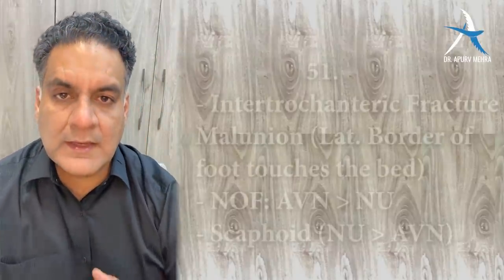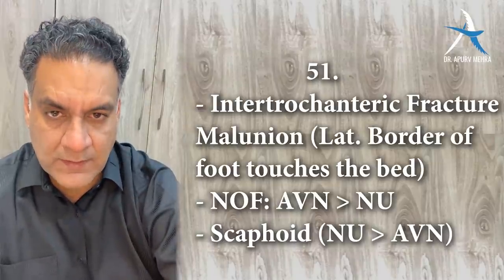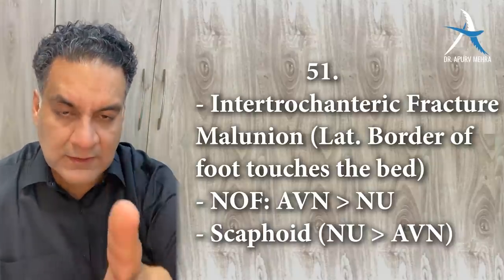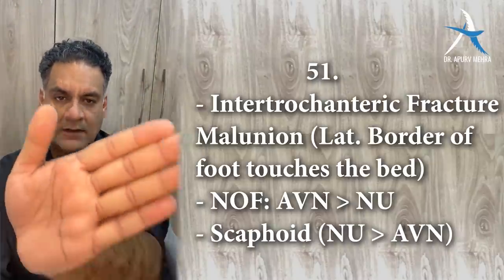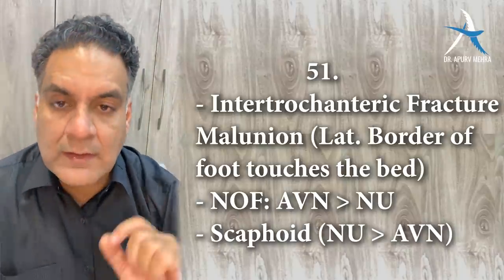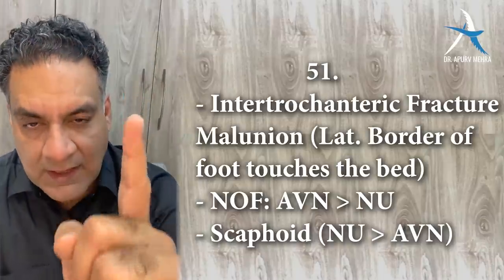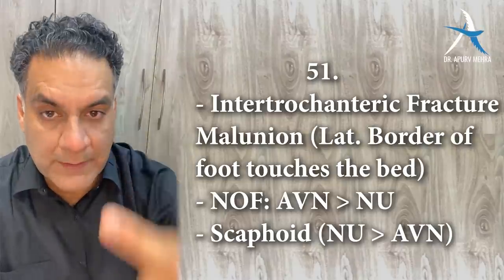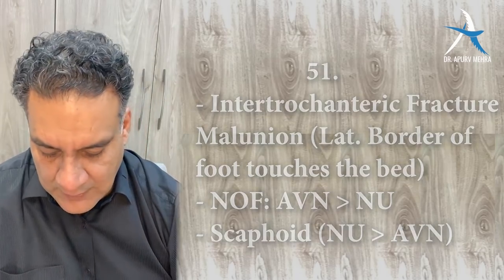Point number fifty-one: intertrochanteric fracture is an extra-capsular fracture of the upper end of femur. Its complication is malunion. The deformity shows complete external rotation — the lateral border of the foot touches the bed — and marked shortening. Whereas neck of femur fractures show mild shortening and mild rotation. The complication of neck of femur is avascular necrosis more than non-union. For the scaphoid, the most common complication is non-union more than avascular necrosis.